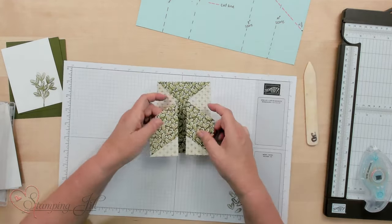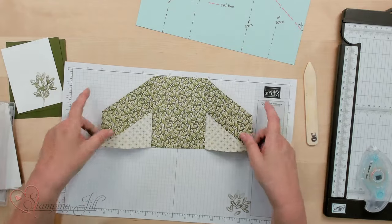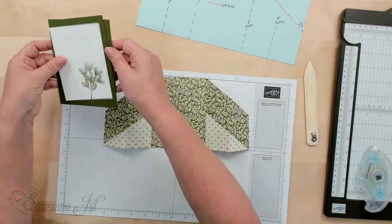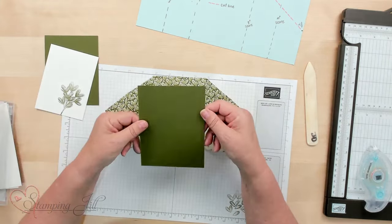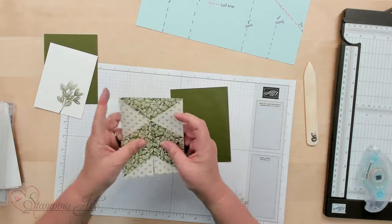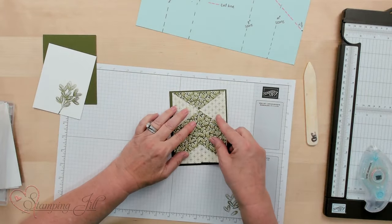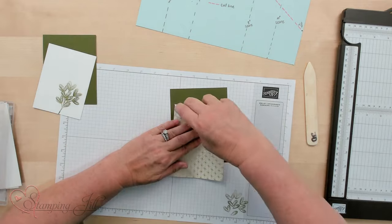Let's go ahead and put it together so you can see how it goes. Now I went ahead and cut. This is the base of the card. So it's 5 1/2 by 4 1/4 and this is going to go right on top. So let's go ahead and put that on.